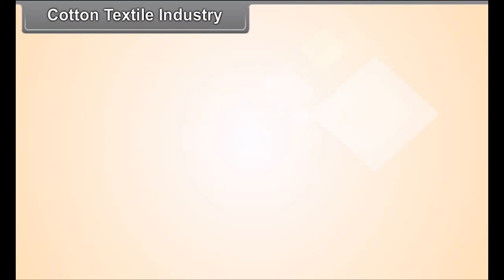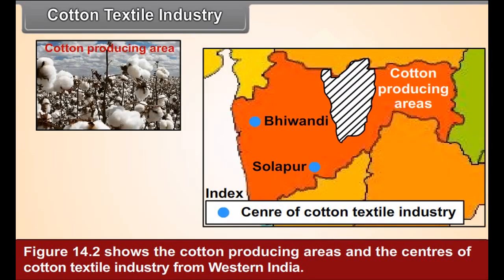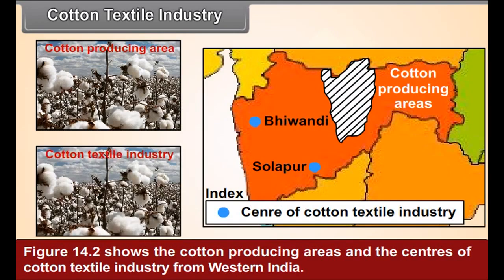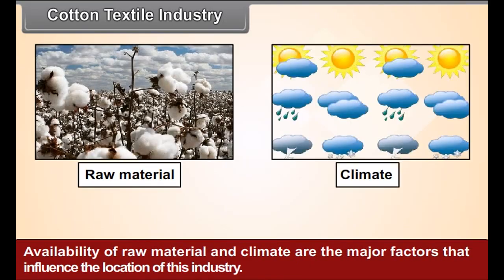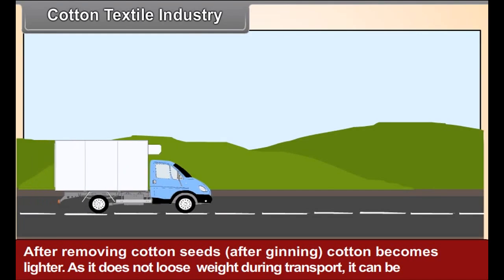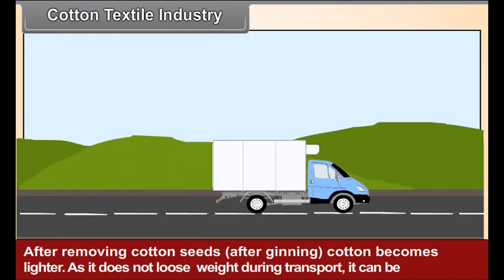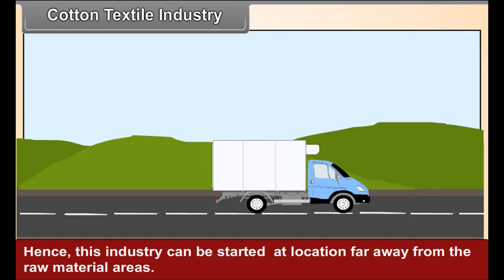Cotton textile industry: Figure 14.2 shows the cotton producing areas and the centers of cotton textile industry from Western India. Availability of raw material and climate are the major factors that influence the location of this industry. Cotton does not perish quickly. After removing cotton seeds — after ginning — cotton becomes lighter. As it does not lose weight during transport, it can be transported over long distances. Hence, this industry can be started at locations far away from the raw material areas.